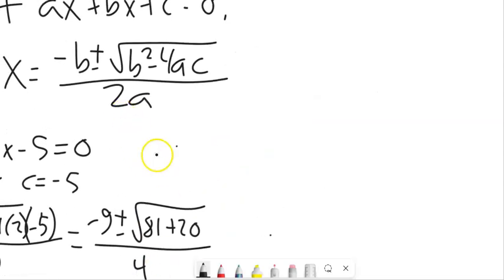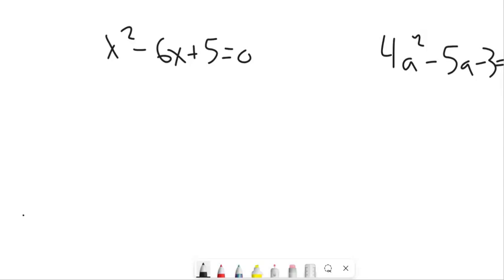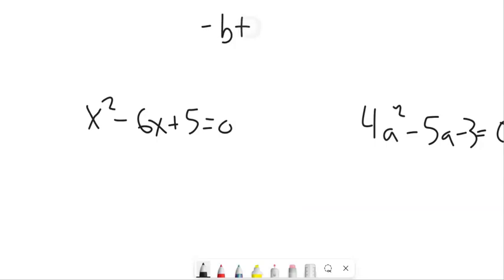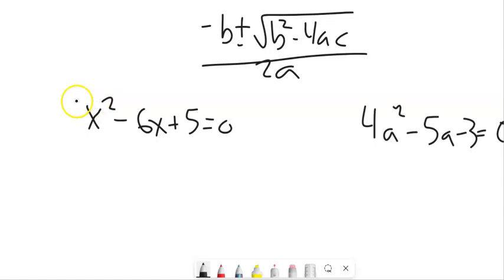I could do another one with this quadratic formula. So X squared minus 6X plus 5. You might see that you could factor that. So factoring is probably an easier, a better choice to do on this for efficiency. But just to show that it works, remember, it's negative B plus or minus the square root B squared minus 4AC all over 2A. So in this case, A is 1, B is negative 6, and C is 5.